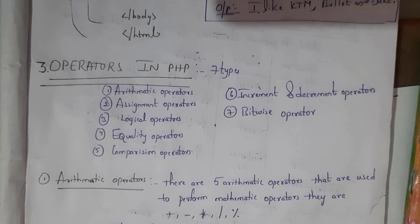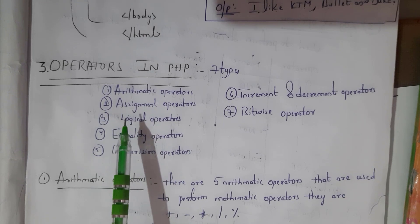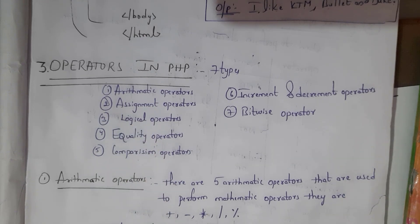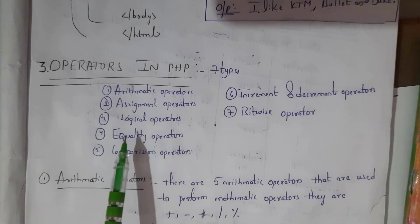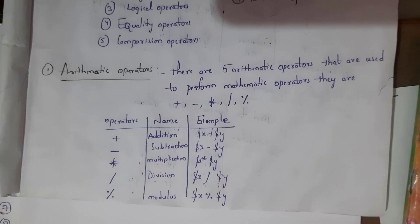First I'll start with operators in PHP. There are seven operators in PHP: arithmetic operator, assignment operator, logical operator, equality operator, comparison operator, increment and decrement operator, and the last one is bitwise operator. I will explain each one in detail.